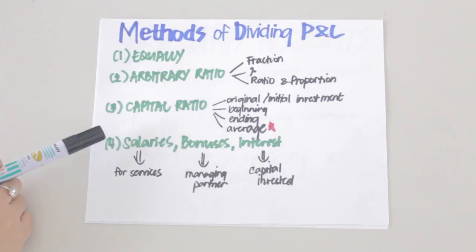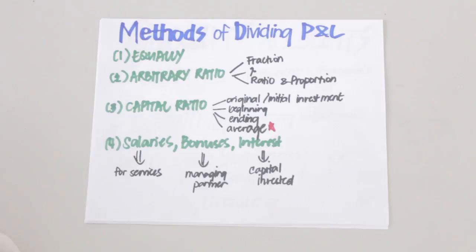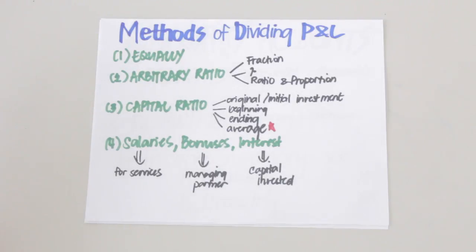Another method of dividing profits and losses is by providing salaries, bonuses, and interest. Salaries are amounts given to partners for services rendered. Bonuses are incentives given to managing partners. Interest, on the other hand, is an amount given as a return for the capital invested. Note that salaries and interest are provided whether the company earns profits or losses, but bonuses are only given when the partnership earns profits.